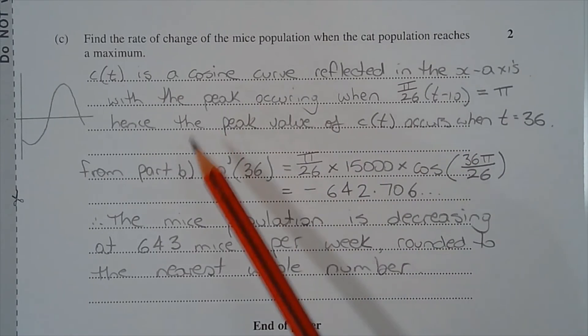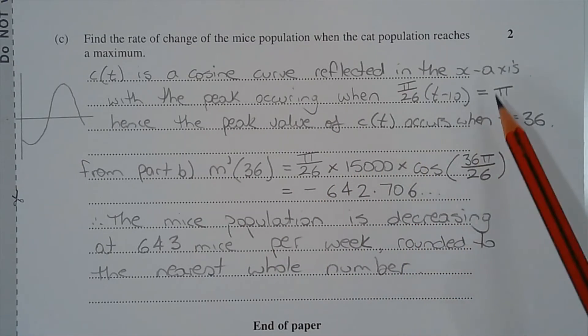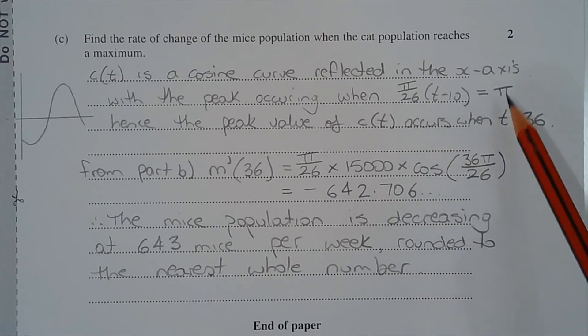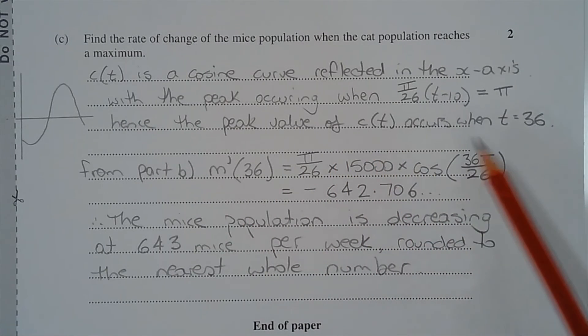Now to find the point where the peak value occurs, we solve this equation for t. And solving this equation for t, we get t equals 36. So the peak value of c(t) occurs when t equals 36 or at the 36th week.